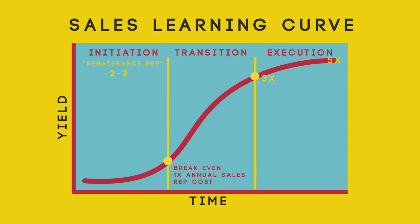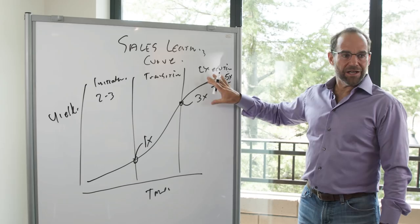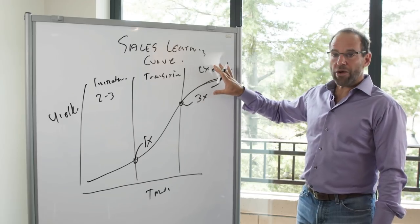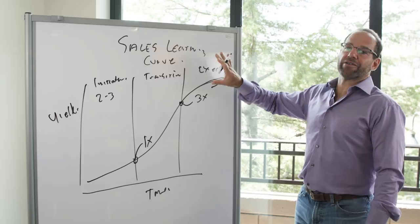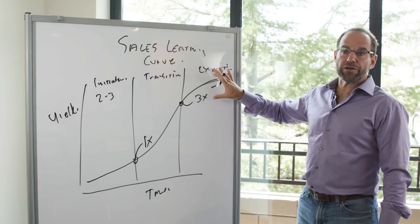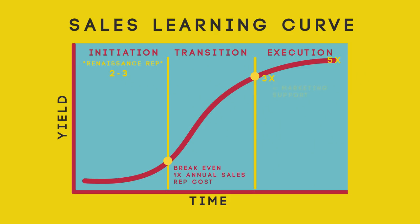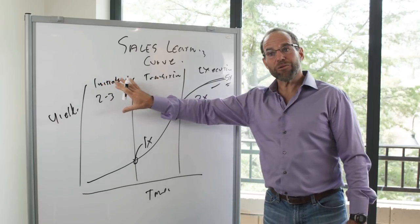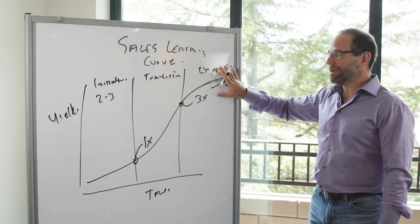Only when you get to 3-5x are you able to think about a repeatable sales model. This is where you can start bringing in people who have been at larger organizations — once you have the marketing support, the sales engineering support, and all the underlying pieces these folks are familiar with. Then we can start bringing in people who are more, I would say, coin operated. In the same way you wouldn't hire a coin-operated salesperson for the initiation phase, I probably wouldn't hire a startup person for the execution phase.